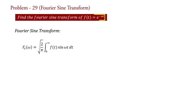Substituting the value of f(t), we have Fs(omega) equal to square root of 2 upon pi, integral 0 to infinity, e raised to minus a t, into sine(omega t) dt.